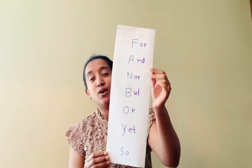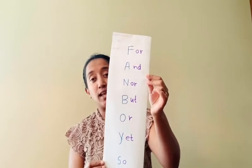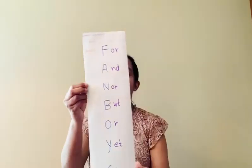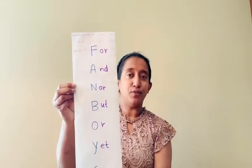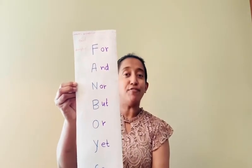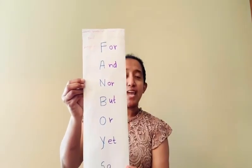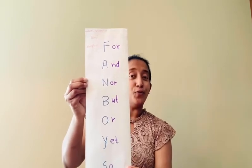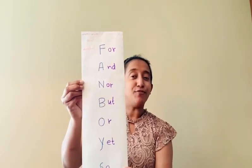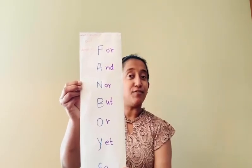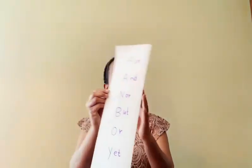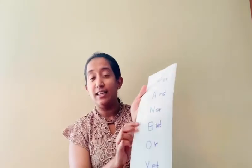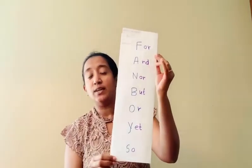When introducing compound sentences, we go through it: F for 'for,' A for 'and,' N for 'nor,' B for 'but,' O for 'or,' Y for 'yet,' S for 'so.' As you can see, that's seven coordinating conjunctions — one, two, three, four, five, six, seven. It's very easy to introduce these seven coordinating conjunctions when teaching compound sentences.